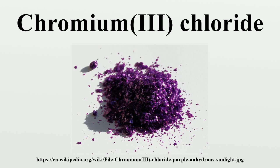Chromium chloride finds uses as catalysts and as precursors to dyes for wool. Anhydrous chromium chloride adopts the YCl3 structure, with Cr3+ occupying two-thirds of the octahedral interstices in alternating layers of a pseudo-cubic close-packed lattice of Cl- ions.